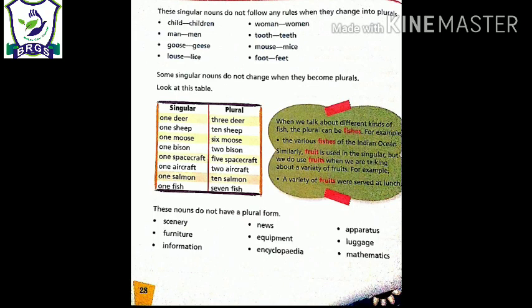But see in the green box - you have been given some additional information. When we talk about different kinds of fish, the plural can be fishes. For example: the various fishes of the Indian Ocean. When we talk about different kinds or variety, it can be changed to fishes. For example, one ocean has jellyfish, starfish, whale fish, simple fish - all of these we can call fishes. But if there are many of the same kind of fish, we call it fish only. Then it will not be changed to fishes. Same goes with fruit. A variety of fruits were served at the lunch. If there is a lot of variety of fruits, we call it fruits. If only one kind of fruit is served, then it is fruit only.